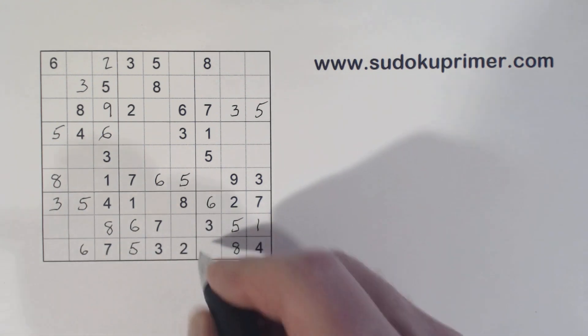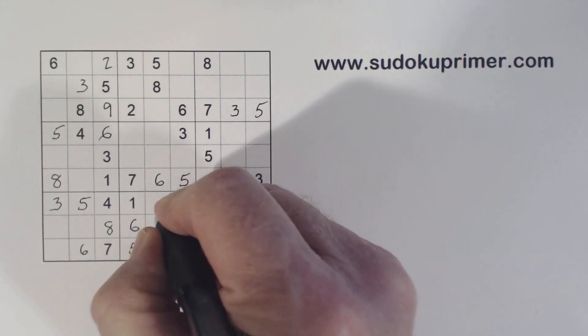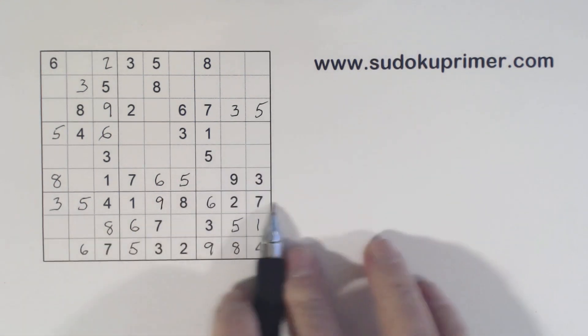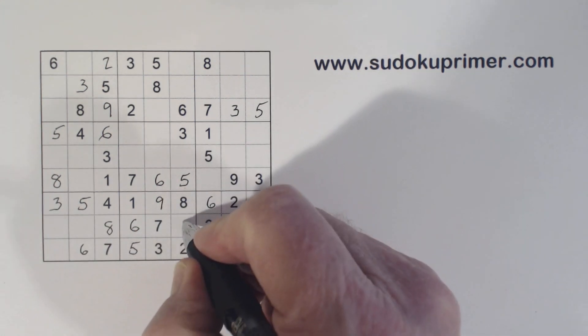And now that leaves a 9 there. We have ghost 9s there, 9, ghost 9s, so that makes that a 9. Of course, that row is complete now, so that was easy. And we can put a 4 there.